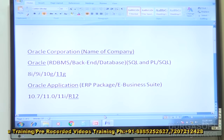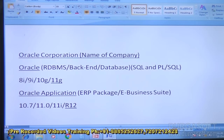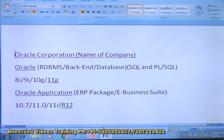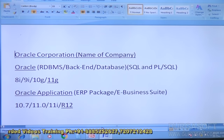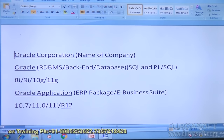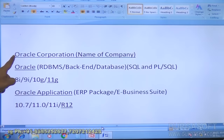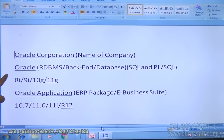Let me help you understand what is meant by Oracle and the difference between Oracle and Oracle applications. Oracle Corporation is the name of the company. Oracle Corporation has two different software products: one is Oracle, and one is Oracle applications. Oracle is one software, and other than Oracle we also have Oracle applications.